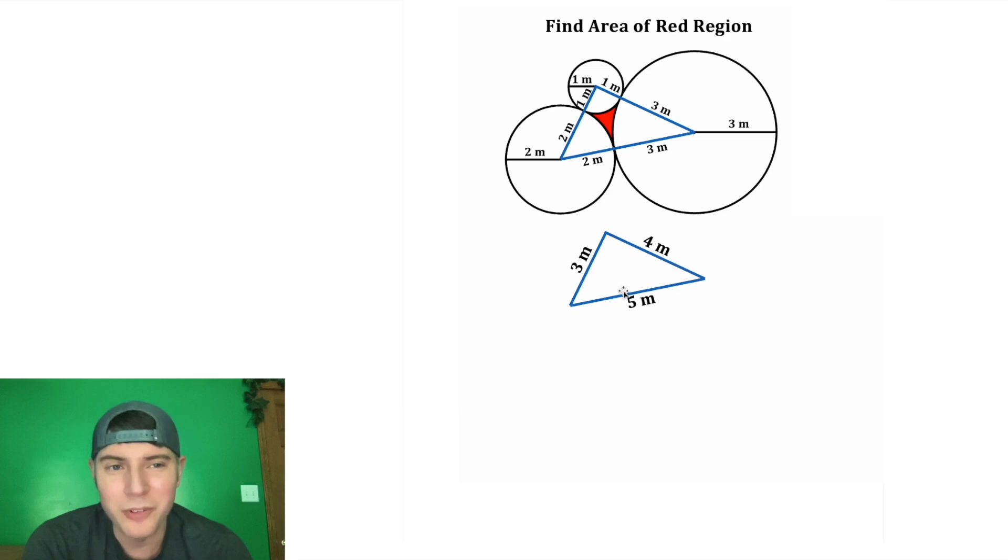So this is a 3, 4, 5 triangle. That is a Pythagorean triple. That means this has to be a right triangle. And here's the Pythagorean theorem that verifies it. All 3, 4, 5 triangles are right triangles.